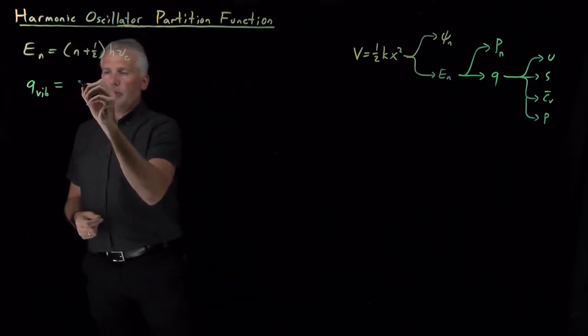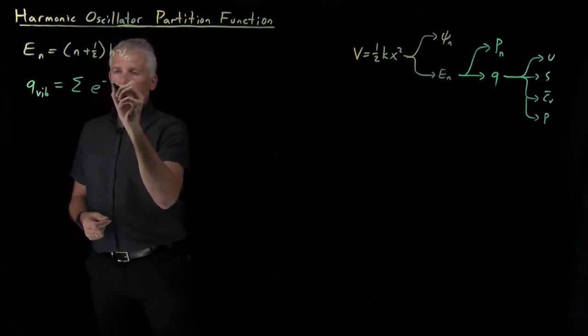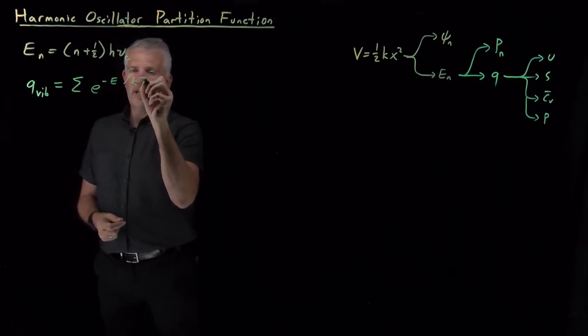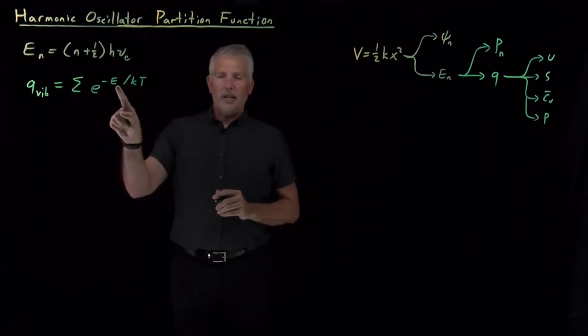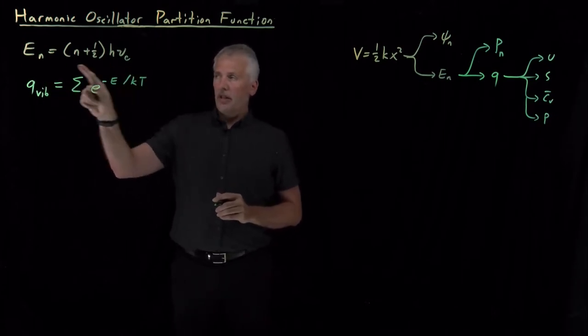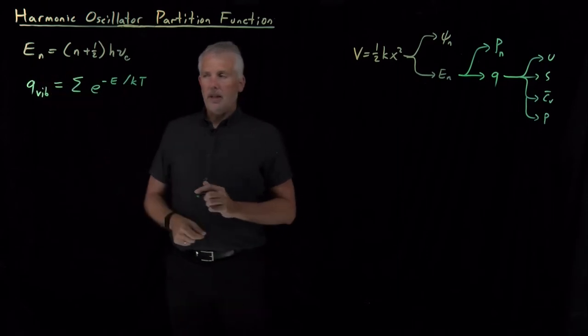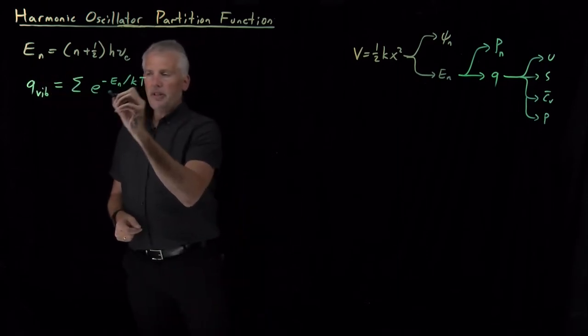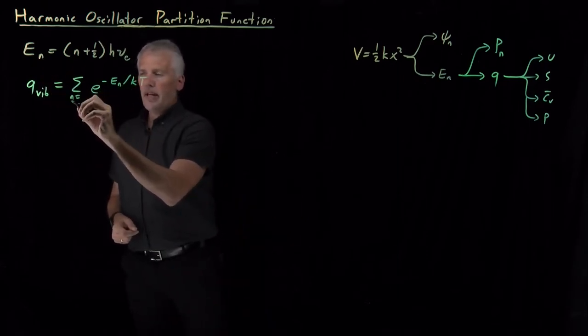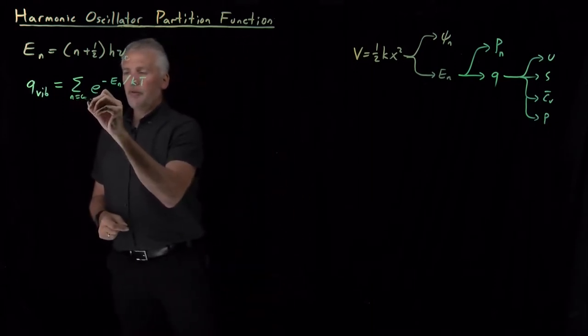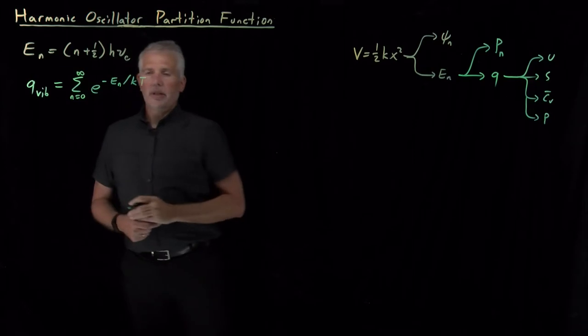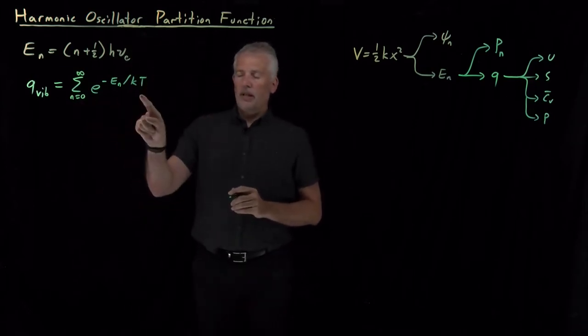As always, that's the sum of the Boltzmann factors, sum of the e to the minus energy over kT's for all the different energies that the system can have. But we know exactly what the energies are for a harmonic oscillator. Each of those energies, e sub n, that number n, that vibrational quantum number, can range anywhere from zero all the way up to infinity. So we just need to complete that sum.